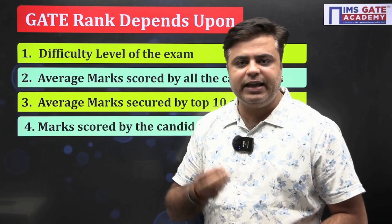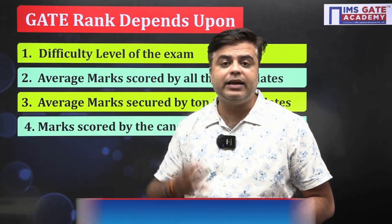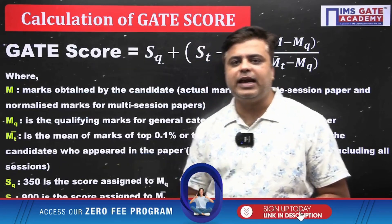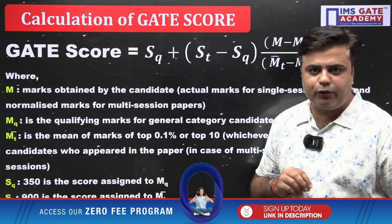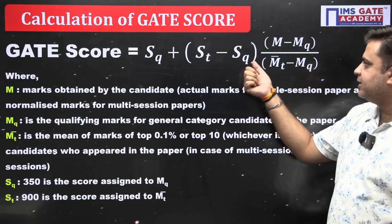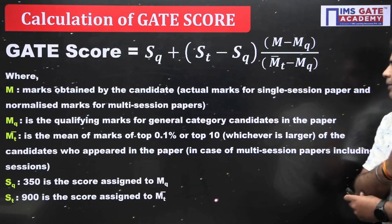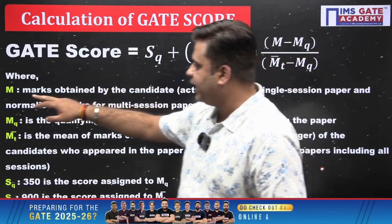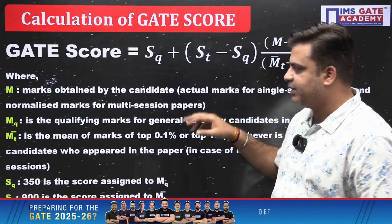These are the four major areas that will decide your GATE rank in the examination. Now, from the GATE marks, how is your GATE score calculated? A standard formula is given for that: GATE Score = Sq + (St − Sq) × (M − Mq) / (Mt̄ − Mq).